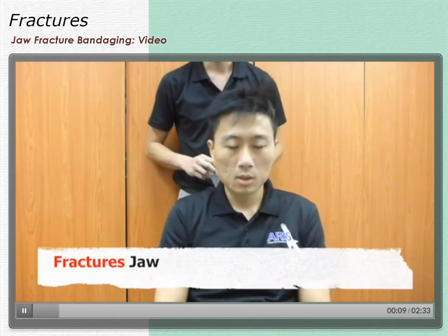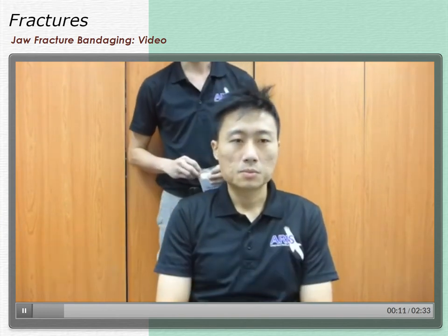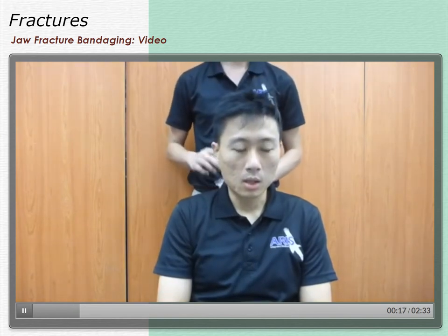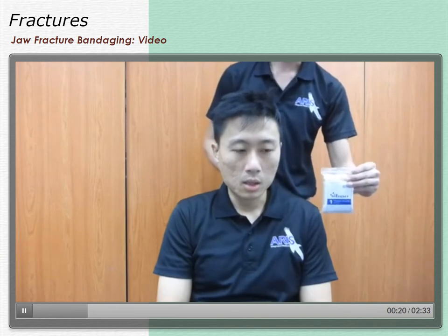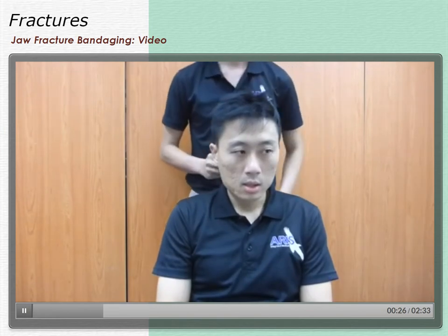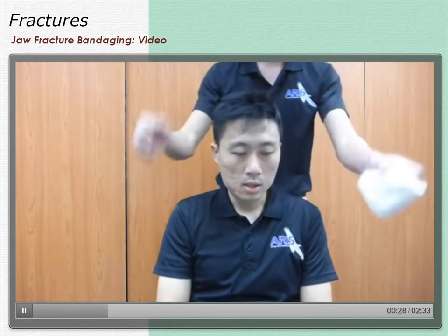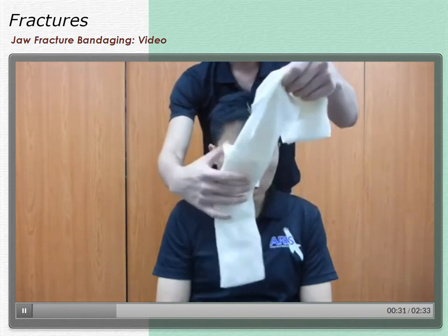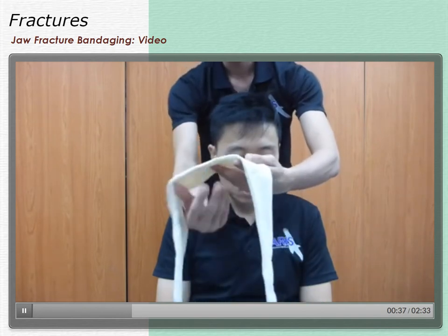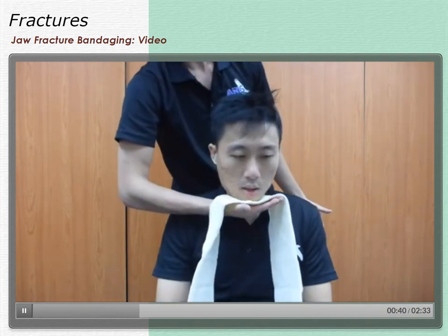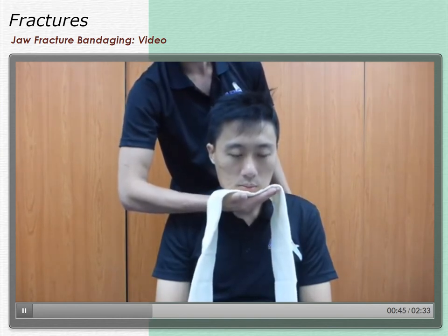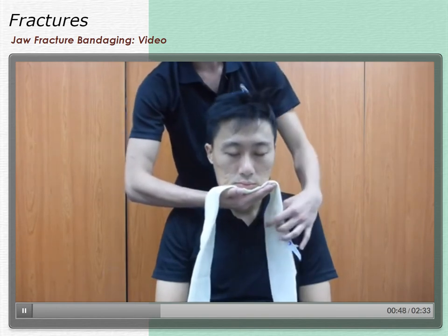Now we're going to cover a jaw fracture. If the casualty is wearing a collar t-shirt, pop the collar up. Use a triangle bandage for this fracture. Get the casualty to relax the arm. Open up the triangle bandage and place it on the palm. On the count of three, tell the casualty you're going to close the mouth — one, two, three. Pull out the collar. Bear in mind it is very painful, so you have to do it fast.